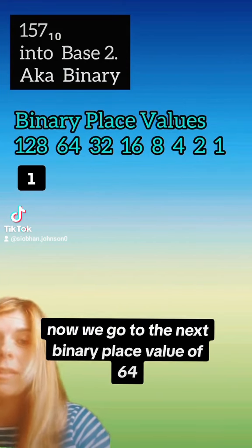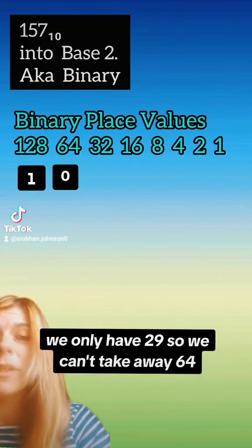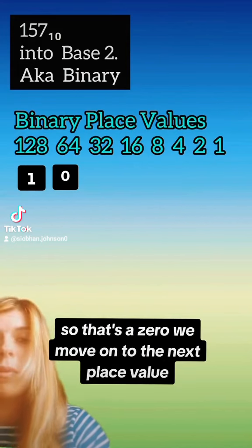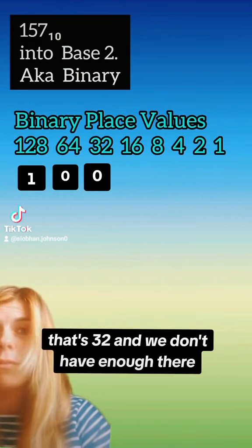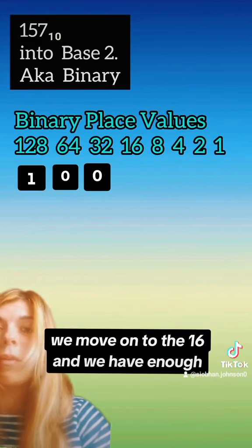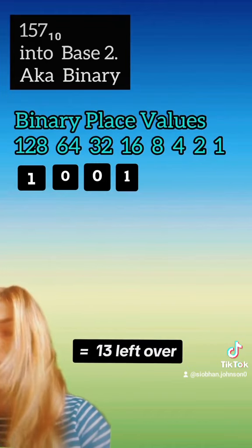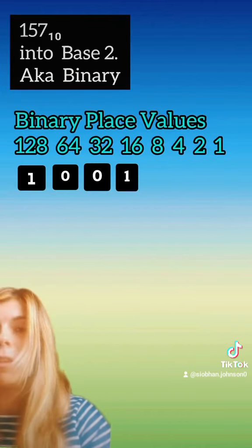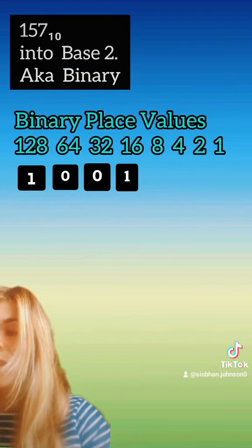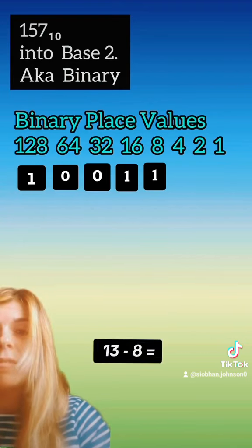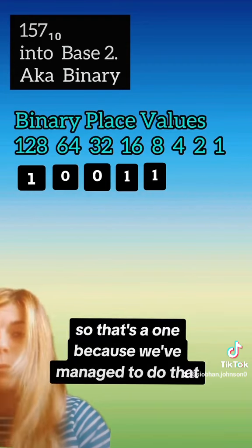Now we go to the next binary place value of 64. We only have 29, so we can't take away 64, so that's a 0. We move on to the next place value, that's 32, and we don't have enough there, so that's also a 0. We move on to 16 and we have enough, so we have 29 take away 16 and we have 13 left over. We move on to the next place value, that is 8, and 13 take away 8 is 5 left over, so that's a 1.